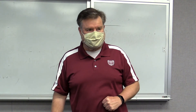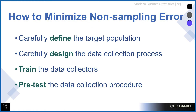How can we minimize non-sampling error? Carefully define your target population — know who you're asking and whether they have the answers you're seeking. Carefully design the data collection process and train your data collectors so that they know to follow the procedures. Pretest your data collection procedure so that you can spot any problems or errors early on and fix them.